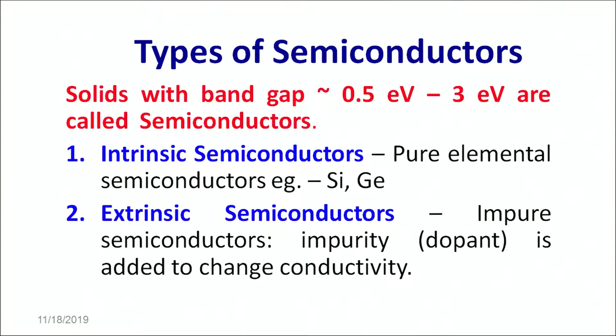The intrinsic semiconductors are pure elemental semiconductors such as silicon, germanium, etc. Extrinsic semiconductors are impure semiconductors. By the word impure we mean that we are going to add an atom of something else inside the material. So an impurity or a dopant is added to change the conductivity. Such semiconductors are known as extrinsic semiconductors.